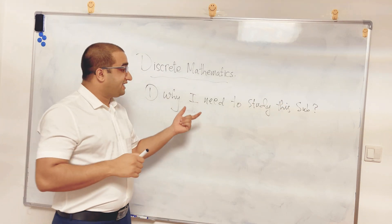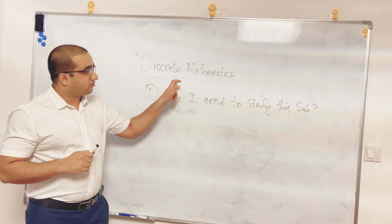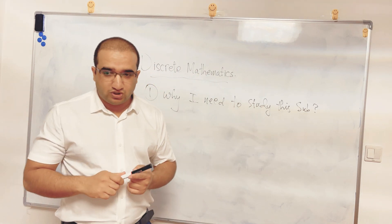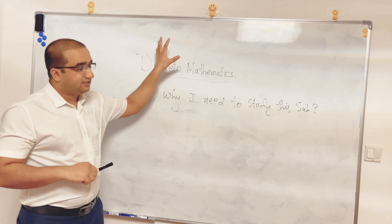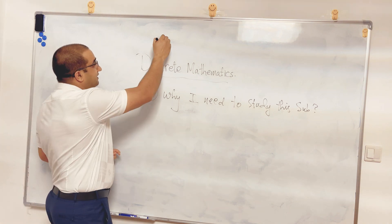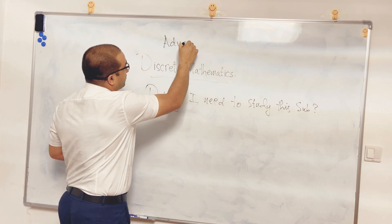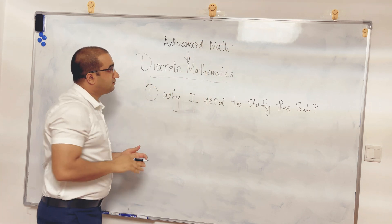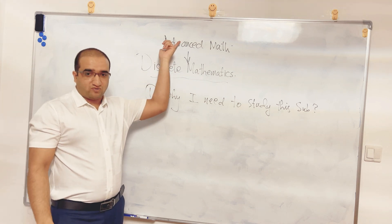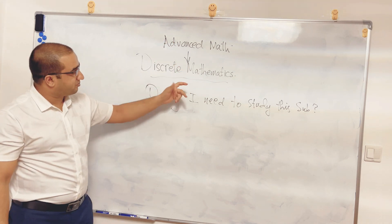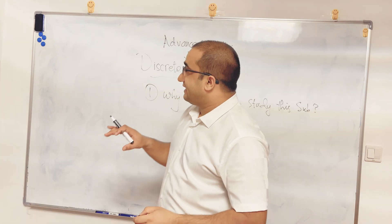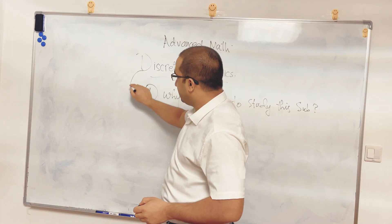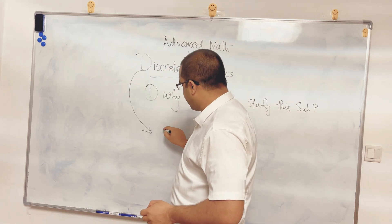And that is the prerequisite of this subject. If you are going to study discrete mathematics, you must have studied already the advanced mathematics. If you have not studied advanced mathematics, then you are not supposed to go to the discrete mathematics. And this course now is to build your maturity to go to the field of the computer science.